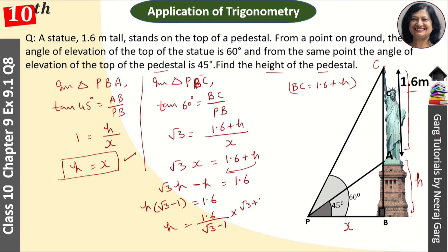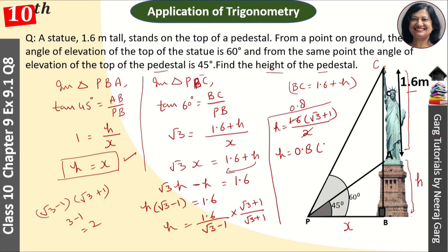Now we rationalize by multiplying by (root 3 plus 1) upon (root 3 plus 1). Root 3 minus 1 times root 3 plus 1 equals 3 minus 1 which is 2. So H equals 1.6 times (root 3 plus 1) divided by 2, which equals 0.8 times (root 3 plus 1) meters. This is our answer.